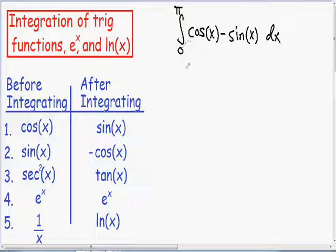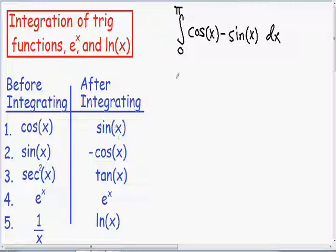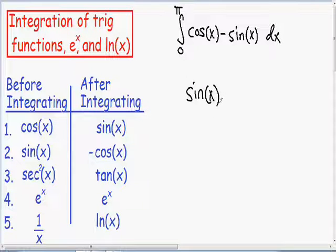Here we have the integral of the cosine of x minus the sine of x. Look at our table on the left, line number one. If we have the cosine of x before we integrate, after we integrate it's going to become the sine of x. So our first term in our integral is the cosine of x, and if we integrate that, it's going to become the sine of x minus the integral of the sine of x.